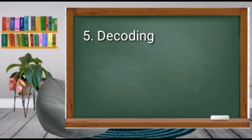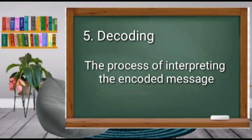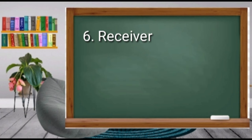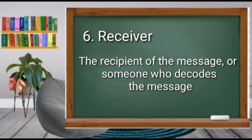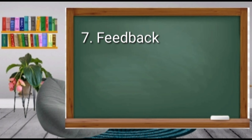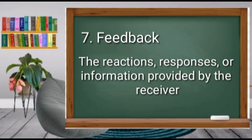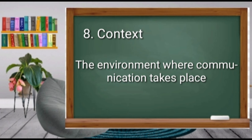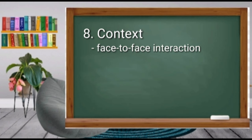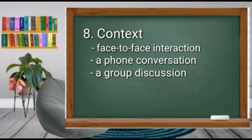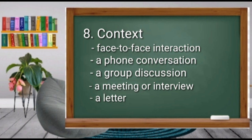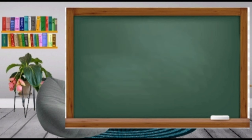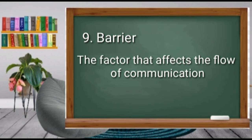Number 5: Decoding. It is the process of interpreting the encoded message. This is done by the receiver. The receiver is the recipient or the one who receives the message. Number 6: Feedback. This refers to the reactions, responses, or information provided by the receiver. Number 8: Context. This is the environment where communication takes place. It can be a face-to-face interaction, a fun conversation, a group discussion, a meeting or interview, a letter, a class recitation, and many others. Number 9: Barrier. This is a factor that affects the flow of communication. Noise is an example of a barrier. It can affect the sending and the receiving of the message.